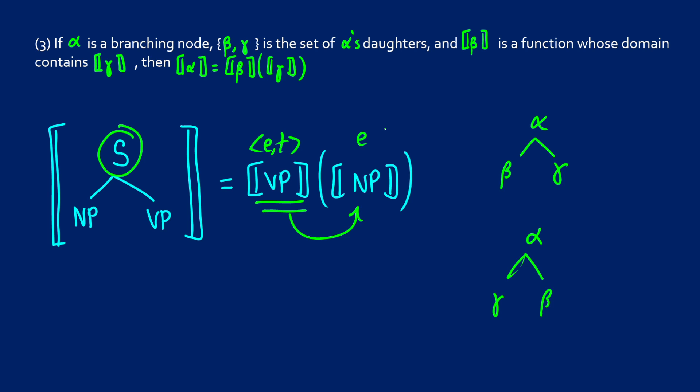In this case we have an e-t function taking on an e, an entity. So in the case of the sentence, the sentence is going to be true if the NP verbs. So whatever the VP is, if the NP VPs. So we're going to see how this looks.